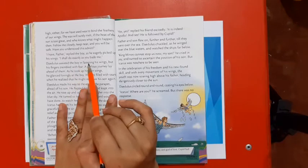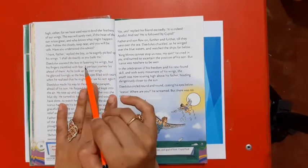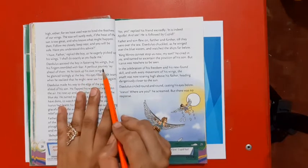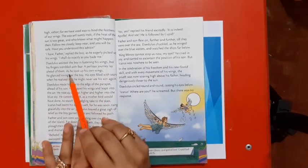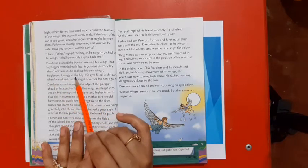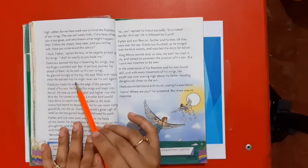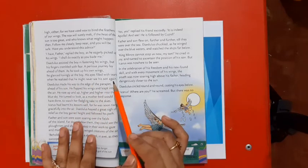Daedalus assisted the boy in fastening his wings, but his fingers trembled with fear. A perilous journey lay ahead of them. As he took up his own wings, he glanced lovingly at the boy, his eyes filled with tears when he realized that he might never see his son again.